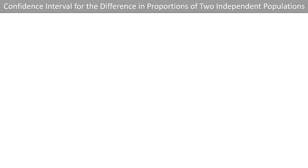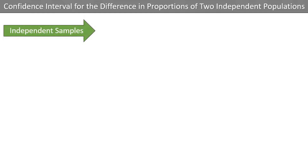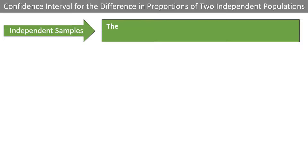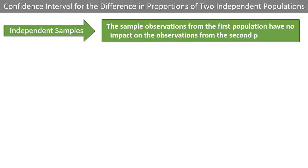Welcome my friends! In this video, we will discuss the confidence interval for the difference in proportions of two independent populations. By independent, I mean that the sample observations from the first population have no impact on the observations from the second population.